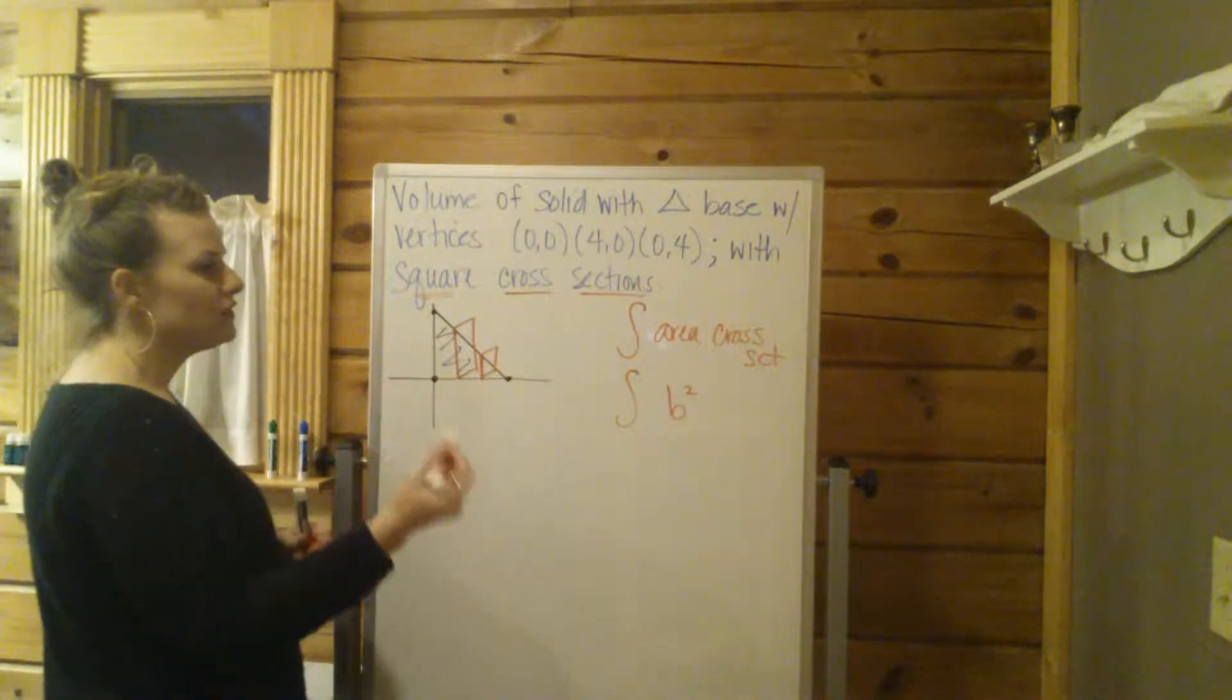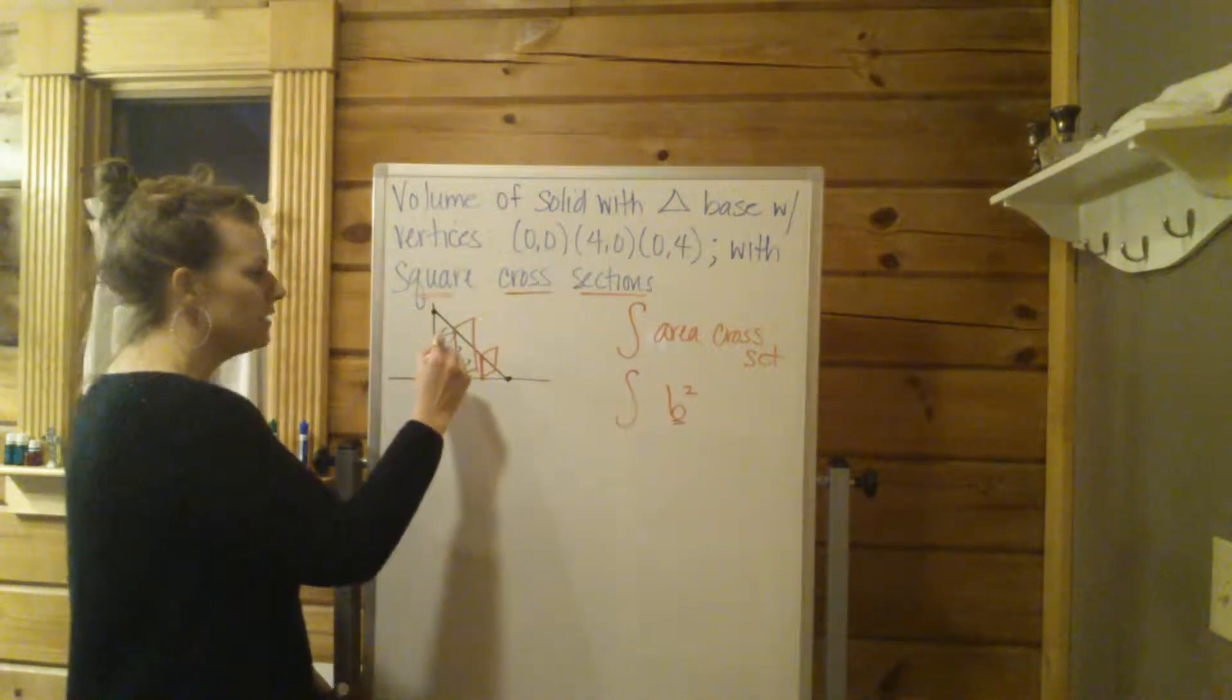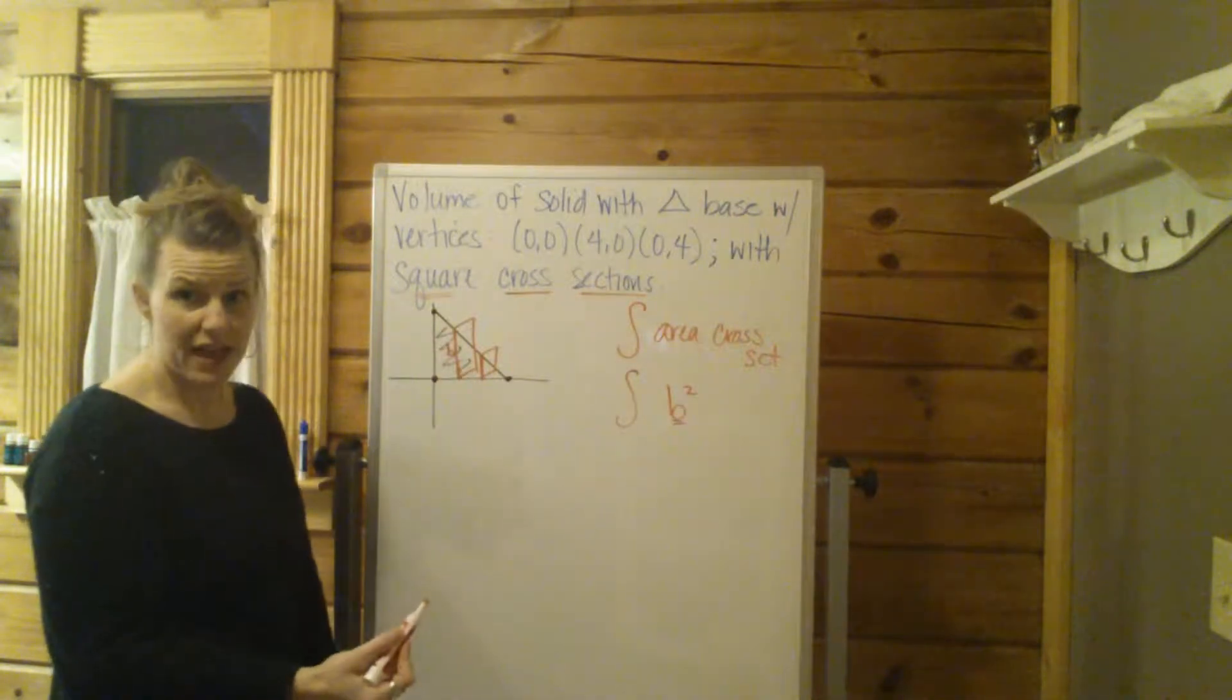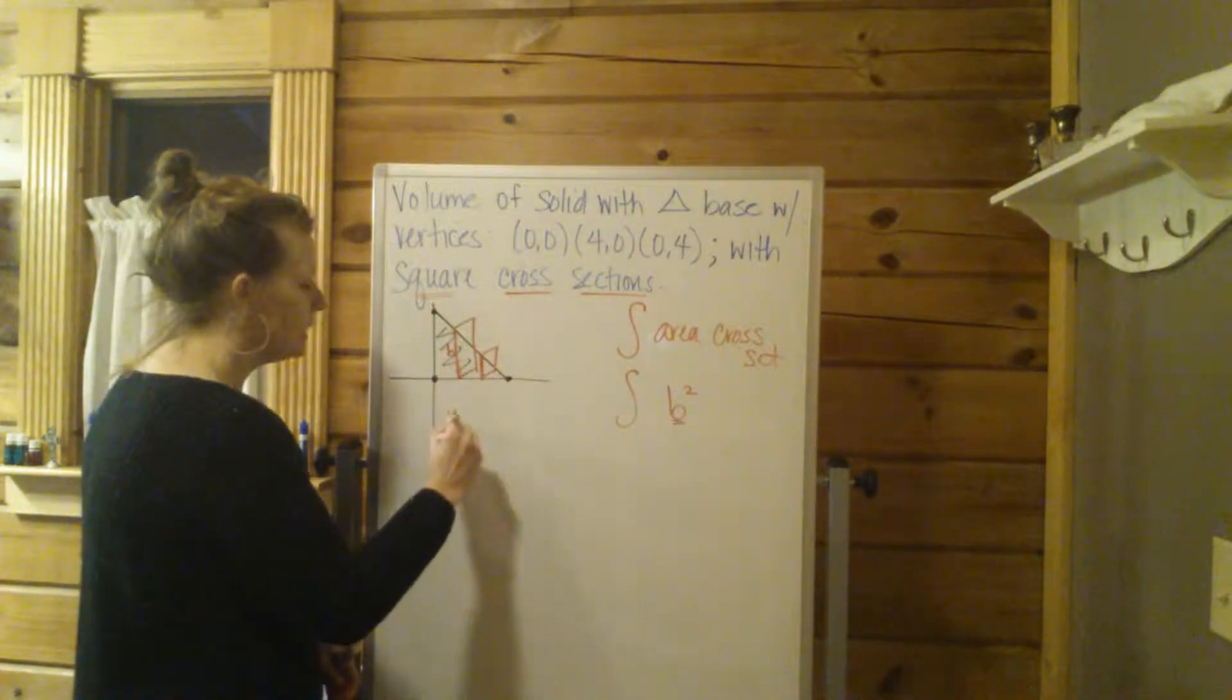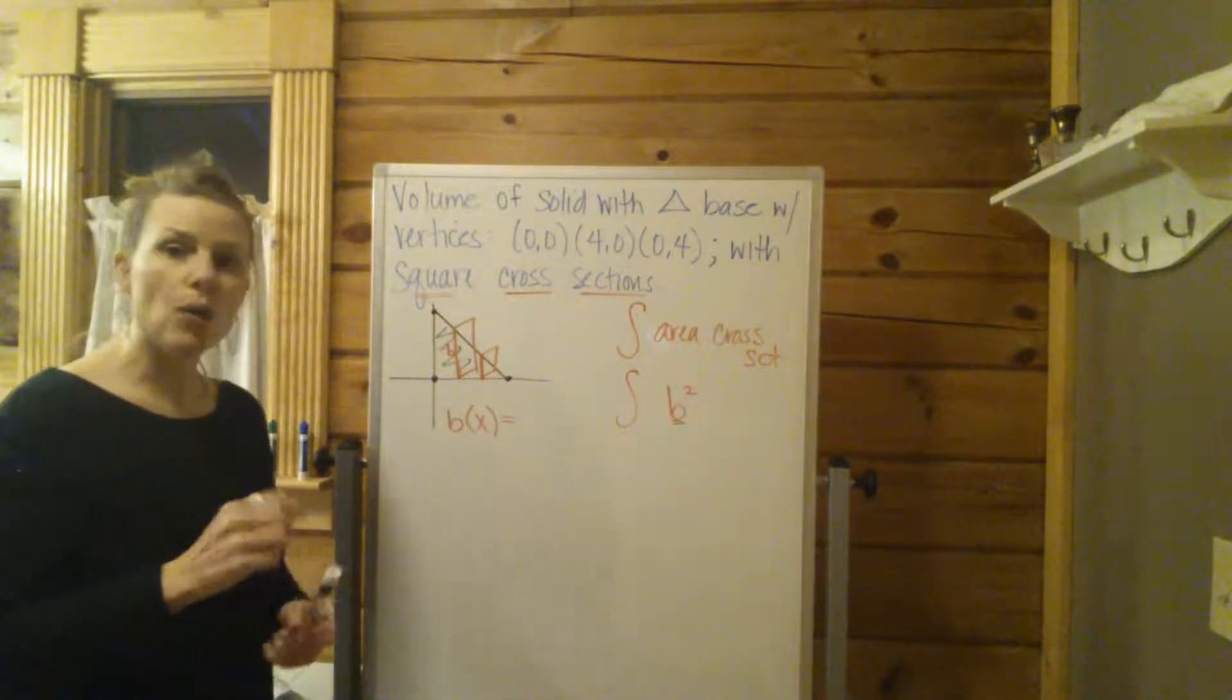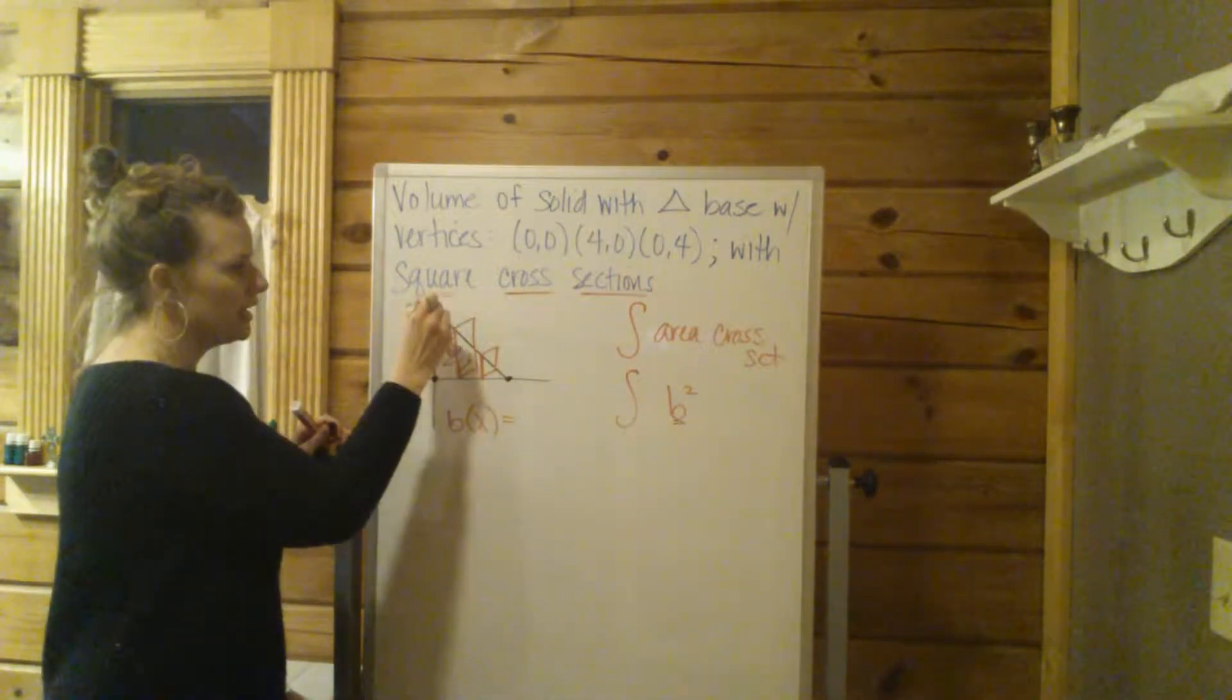Okay, so what we have to do now is we have this b that we have to represent this b, which is right there, the length of the bottom of that square. We have to represent that in terms of x. So b as a function of x. This will always involve this line. This line right here.